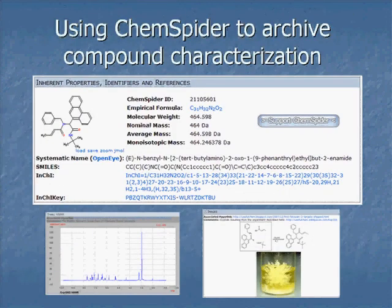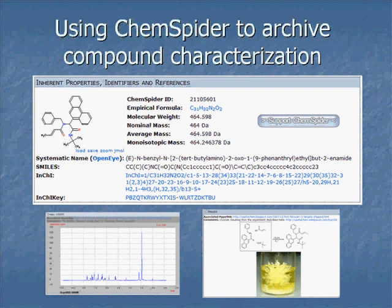I'm going to revisit ChemSpider a couple of times — it can do some very useful things. Once we've characterized the compound, we can actually upload the spectrum in JCAMP format. Right on the record of that compound, you can expand and zoom in to various peaks. You can also upload pictures — for example, a picture of a particular precipitate. You can upload any of the spectra: JCAMP format works for IR, NMR, and mass spec. It's the most convenient format we've found to stay open.